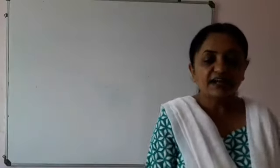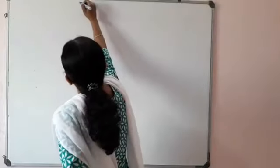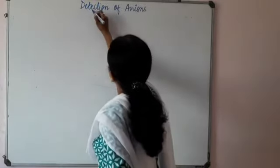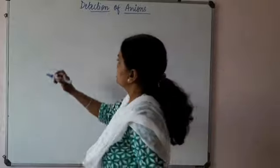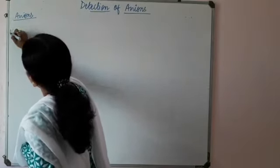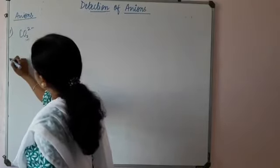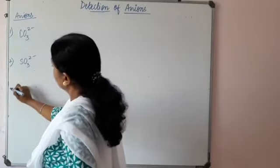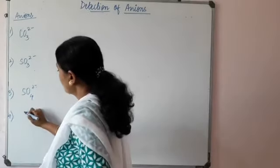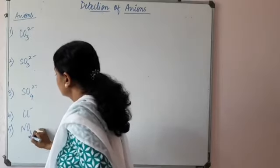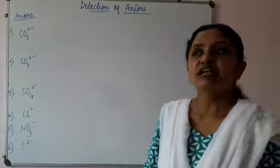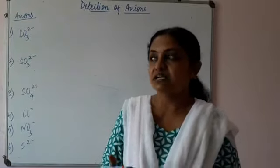Now we will be studying detection of anions. There are six anions in our syllabus: carbonate, sulphite, sulphate, chloride, nitrate, and sulphide. Let's first understand — in the previous video I explained detection of cations, and now suppose the salt given to you is copper carbonate, but you are not aware of that.